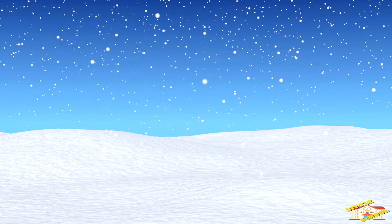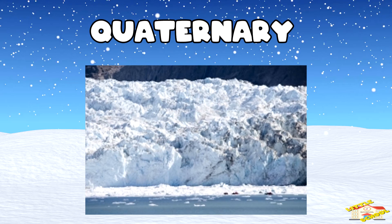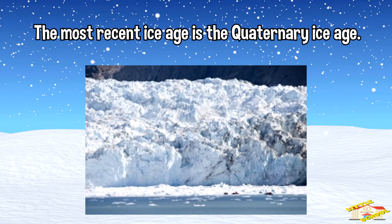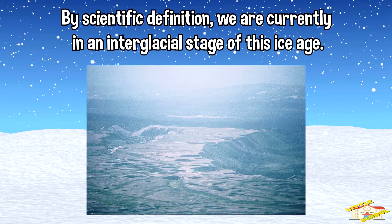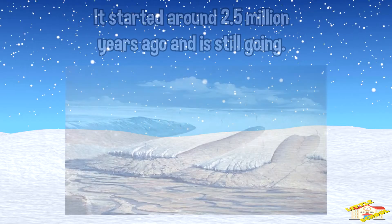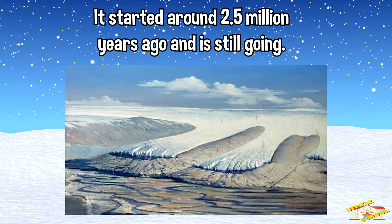The Karoo ice age is named after glacial tills in Karoo, South Africa, that scientists think were developed during this ice age. The fifth is Quaternary. The most recent ice age is the Quaternary Ice Age. By scientific definition, we are currently in an interglacial stage of this ice age. It started around 2.5 million years ago and is still going.